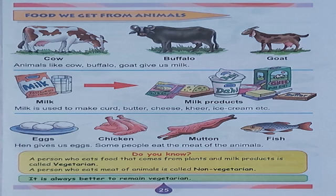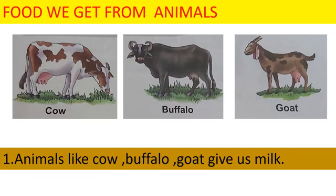See, there are three steps and I will explain one by one. Number 1 is cow, buffalo, and goats. Animals like cow, buffalo, and goats give us milk. Second are milk products, and the third is related to the meat of animals. We get milk from cow, then buffalo and goat.